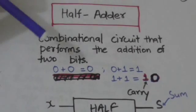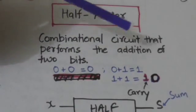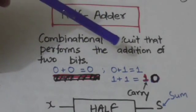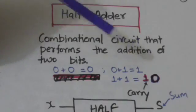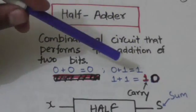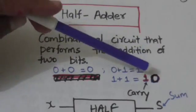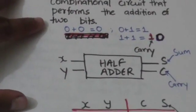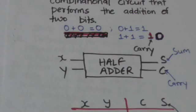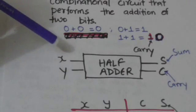When we add two bits, if both bits are zero then the result would be zero. If one bit is one and the other is zero, then the result would be one. If both bits are one, then a carry would be produced — the result would be one zero, which is a binary number whose decimal value is two.